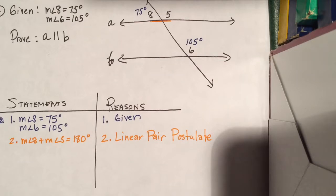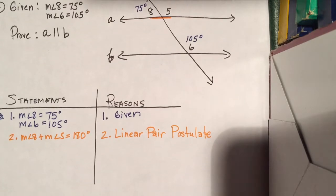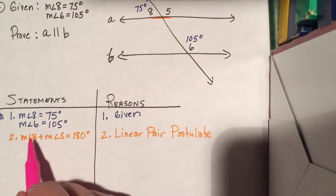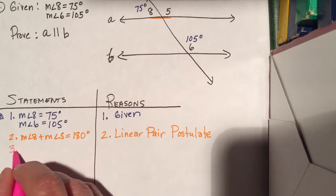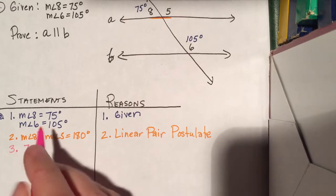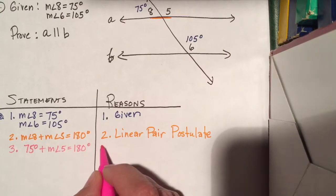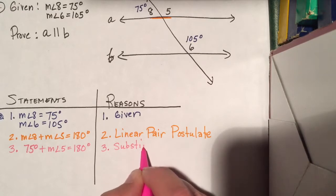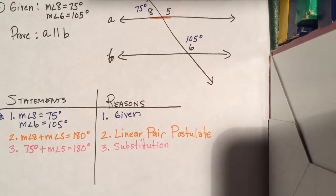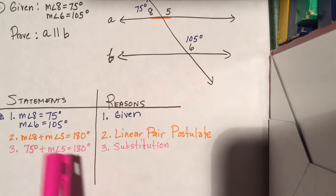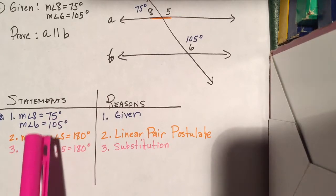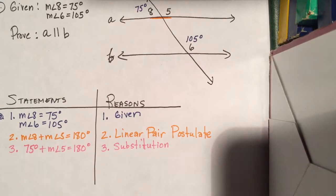Now, on the one we did the other day I wrote a number in there, but I'm going to actually show you with the substitution. What do I know about angle 8? Angle 8 is already 75 degrees. So 75 degrees can be substituted in for angle 8. So: 75 degrees plus the measure of angle 5 is equal to 180, and that's by substitution — if you substitute one equal value in for another. I've taken the 75 degrees and substituted it in for the 8.